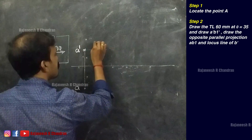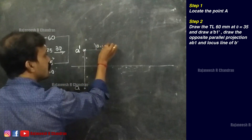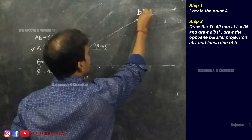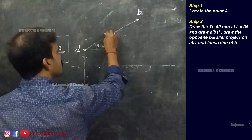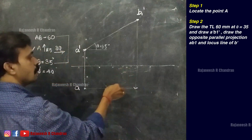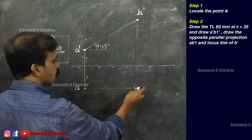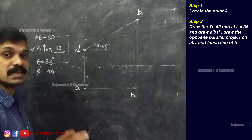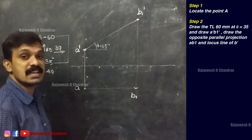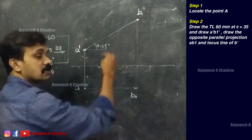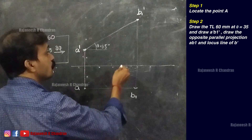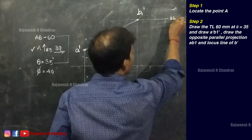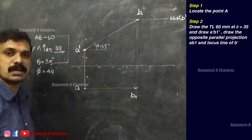So how can we locate B1'? At an inclination of theta equals 35 degrees, we draw a line of length 60 and name that point B1'. Since this is the true length, its opposite projection will be a line parallel to XY. So that can be named B1. Similarly, as in the previous case, there was a locus line of B', and on that locus line we intercepted the true length. In this case we have B1', so we can draw a line through that point — that line will be the locus line of B'.